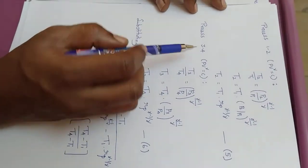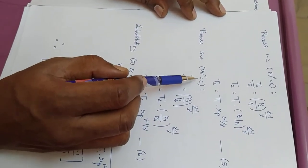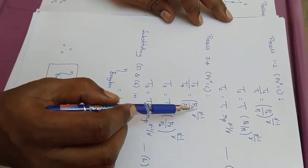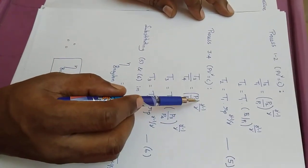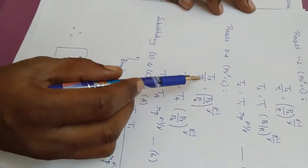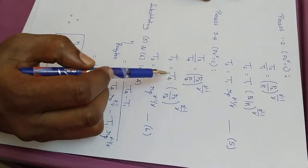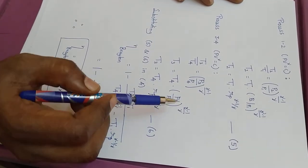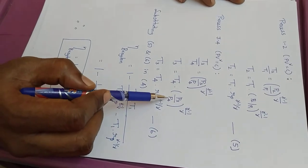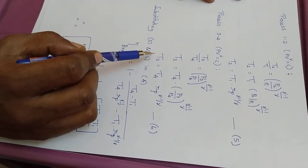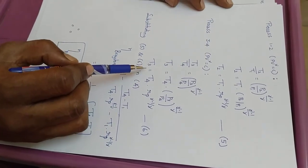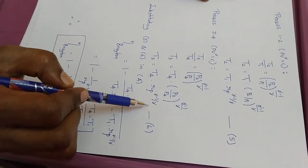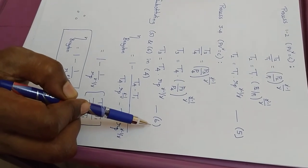When we consider process 3 to 4, the isentropic expansion process, T3 by T4 is equal to (P3 by P4) raised to the power (gamma minus 1) by gamma. Therefore T3 is equal to T4 into Rp raised to the power (gamma minus 1) by gamma, since P3 by P4 is also the pressure ratio. Let us take this as equation 6.